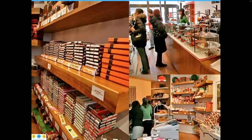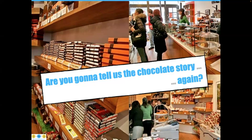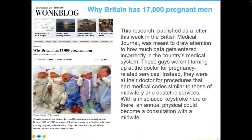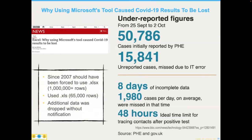I tell these examples so much that I want organizations to say 'Are you going to tell us the chocolate story again?' — and when I say again, they actually get it. They understand what's going on because they've now inculcated this into their culture. Here's one where Britain had 17,000 pregnant men because of coding errors — misplaced keystrokes. Same thing in the UK during the coronavirus: using the wrong version of Microsoft Office caused them to misunderstand the numbers they were getting because the .xls files only contained 65,000 rows as opposed to the million rows that you can now put in an .xlsx file, but the data was dropped without notification.